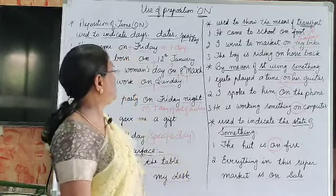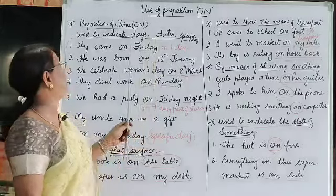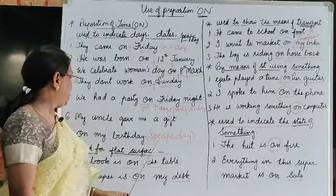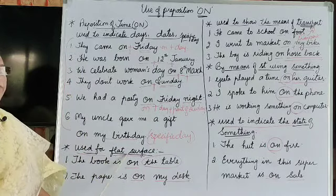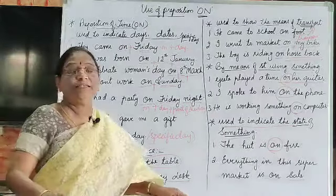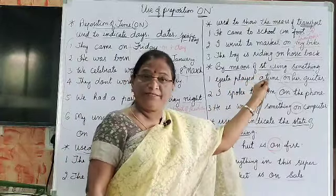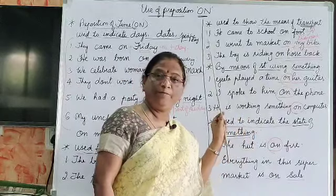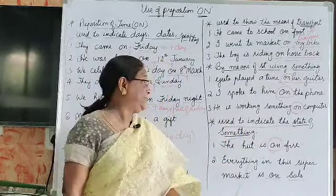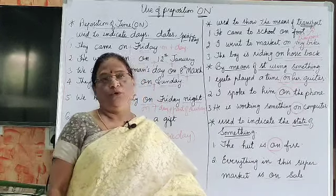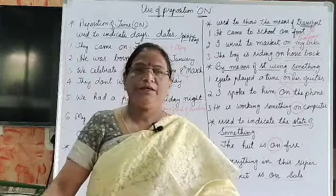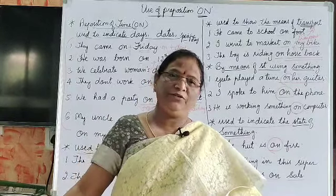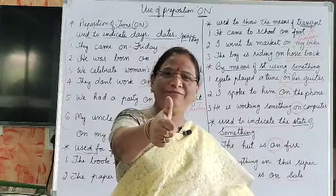To summarize: we use 'on' for time — days, dates, and specific days; for flat surfaces; for means of transport; for doing something by using something; and to indicate the state of something. Hope you understand. Thank you for watching my video. Please like, share and subscribe. Keep smiling. See you next time.